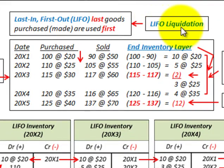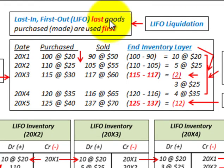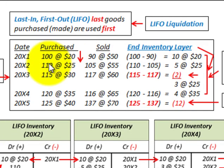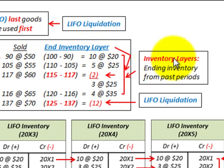What we're going to be looking at here is LIFO inventory liquidation. What we mean by LIFO is where the last inventory in is the first inventory out. It stands for LIFO — the last goods that are purchased or made are the first ones used. What we mean by LIFO liquidation is where we're going to be making some purchases each year, and what happens is we purchase more inventory than we actually sell, so we have some ending inventory for each period. This ending inventory is carried over as what they call a layer — an inventory layer.